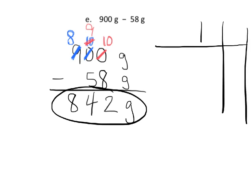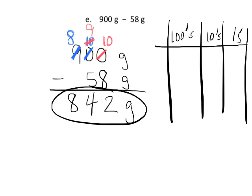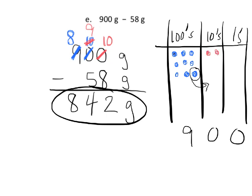Here's our place value chart with ones, tens, and hundreds columns. We had 9 hundreds, so I'll draw all nine. The idea is we take one of those hundreds and regroup it next door as 10 tens — I'll draw those in red. That means we go from 9 hundreds down to 8, and from 0 tens up to 10 tens.